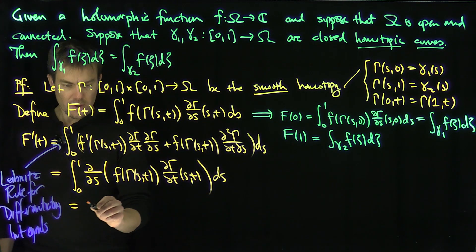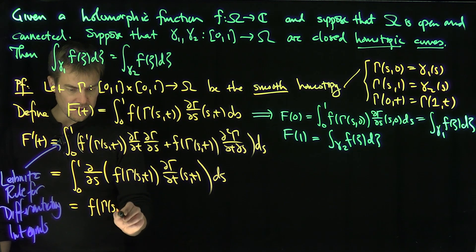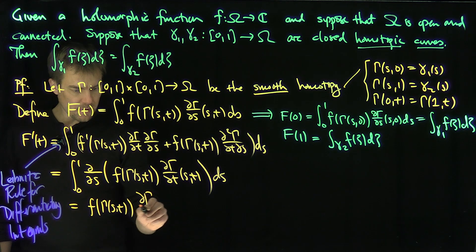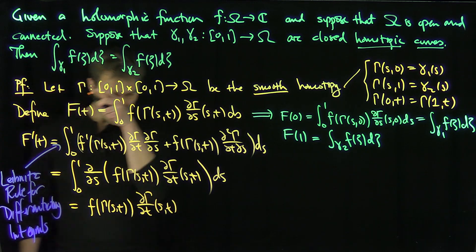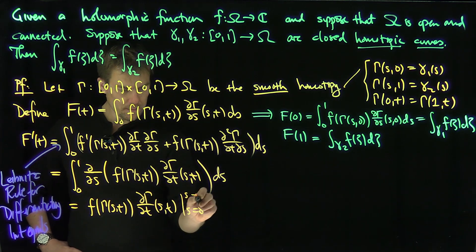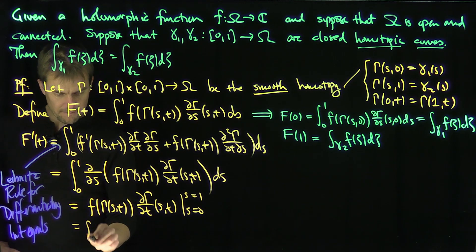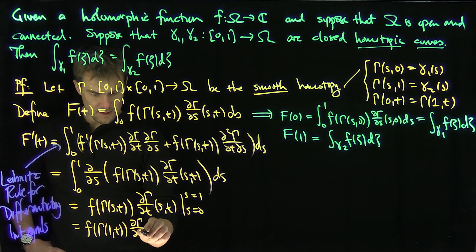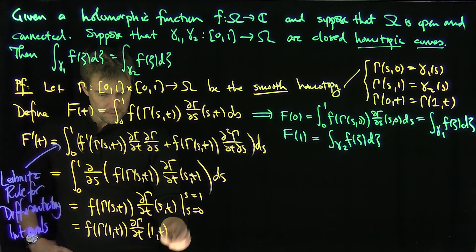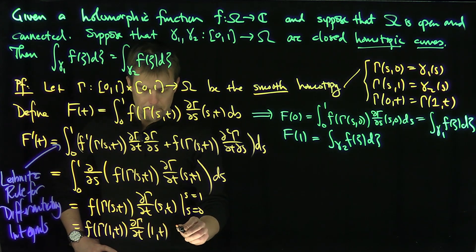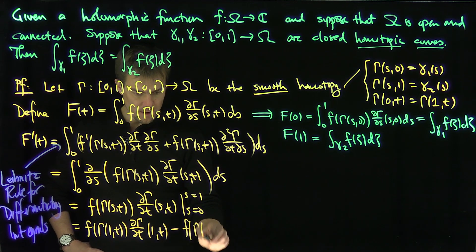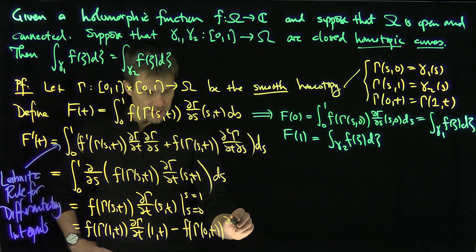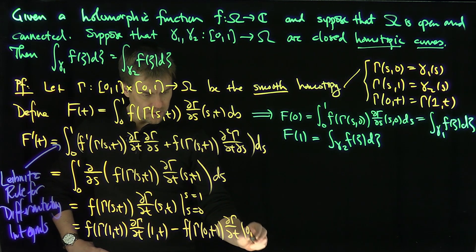So this is going to be F of gamma of (S,T), and then d gamma dT of (S,T), evaluated from S equals 0 to S equals 1. So this is going to be F of gamma of (1,T), d gamma dT of (1,T), and then minus F of gamma of (0,T), and then d gamma dT (0,T).